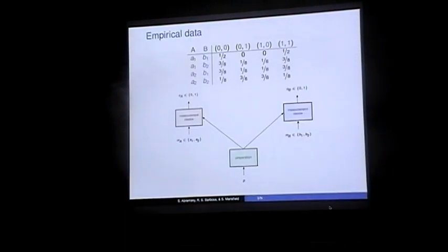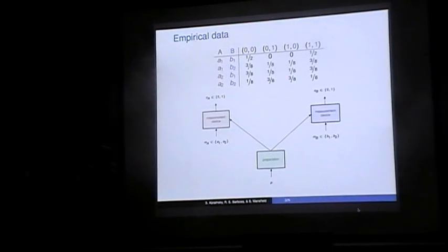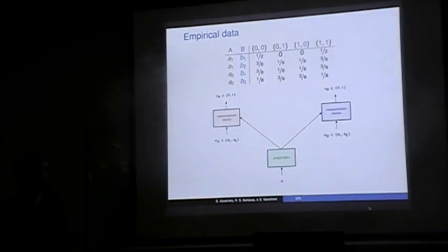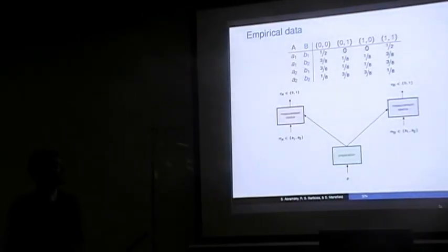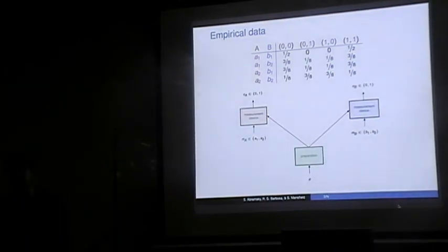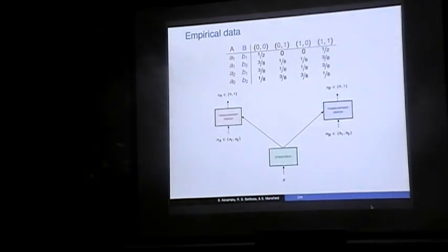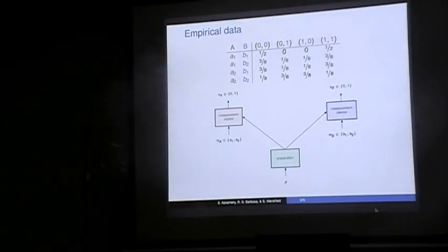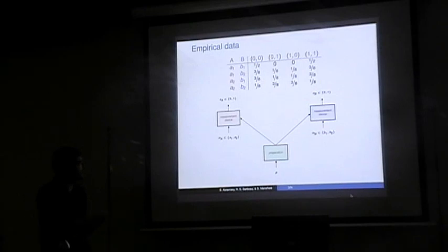The kind of empirical situation we're looking at is the sort of thing Kohei was talking about already. The idea is that we have some sort of empirical procedure — we have a number of measurements that we can make together, and for such measurements you can have probabilities of the joint outcomes. In particular, this is the usual Bell scenario: we have Alice and Bob. Alice can choose between measurements A1 and A2, Bob can choose between B1 and B2, with outcomes 0 and 1.